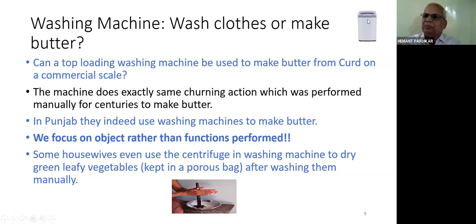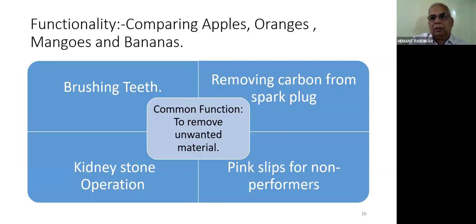Our problem is if I make this out of context statement wash clothes or make butter, we focus on the image of washing machine, we don't look at what function it performs. It performs the same churning function which the hand churner does. Some housewives even use the centrifuge in washing machine to dry green leafy vegetables kept in a porous bag after washing them manually. TRIZ says always focus on function, not on the object. This helps to remove psychological inertia.